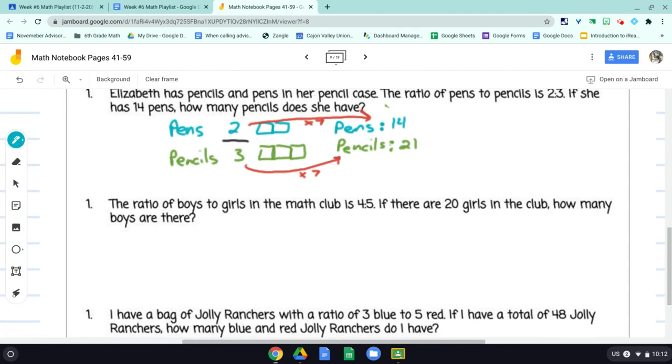The ratio of boys to girls in the math club is 4 to 5. If there are 20 girls in the club, how many boys are there? Okay, so I'm going to do boys to girls again. Boys will go blue. Girls, let's go with orange. Okay, so it's 5 girls and 4 boys in the class. That's the ratio of 4 to 5. There may be more than that. But I'm going to make my tape diagram here.